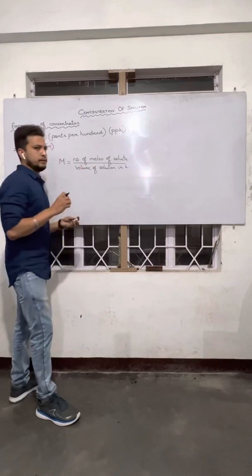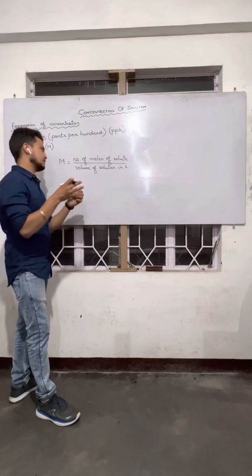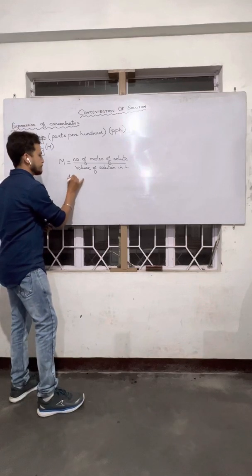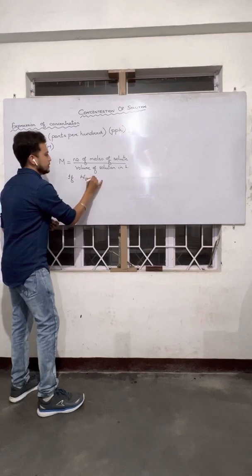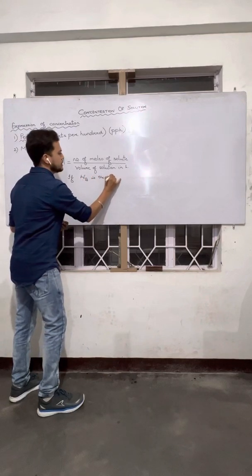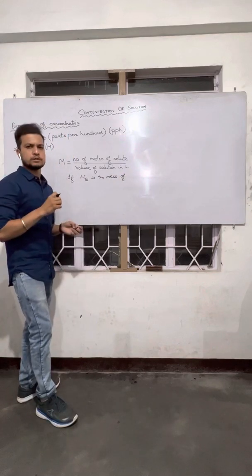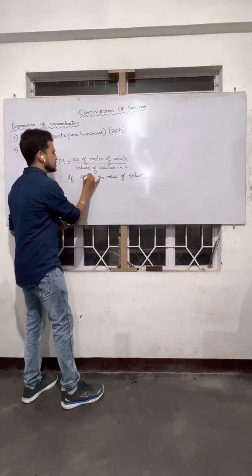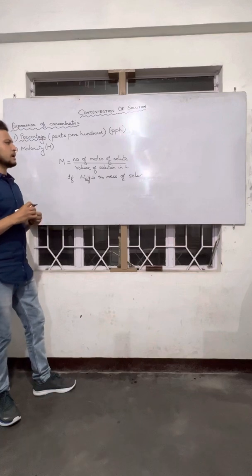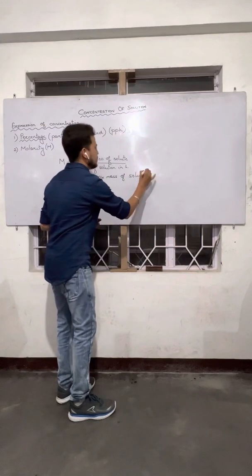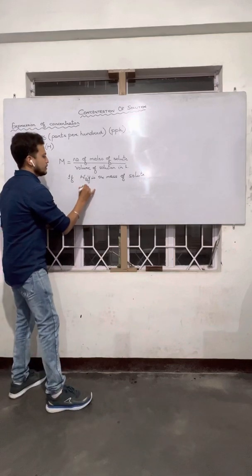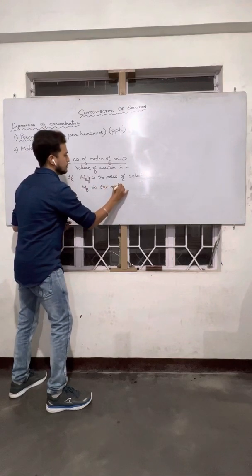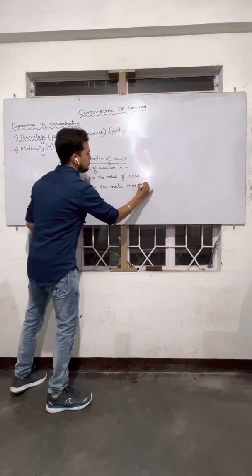Now, if we are given a mass of solute and the molar mass of the solute is known: let's say Wb is the mass of solute given to us. In our problem, the number of moles is not given but mass is given. Mass of solute is given as Wb grams, and let's say the molar mass of the solute is Mb.